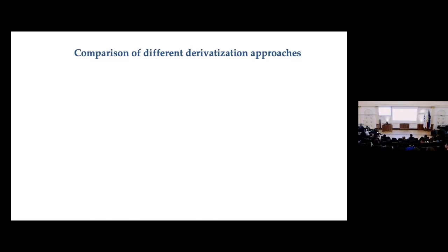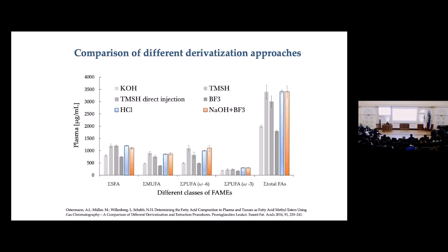The derivatization protocol also depends on the type of sample matrix you are using. The same protocol cannot be applied to biological samples as to food, and even within biological samples it can vary from urine to plasma or serum. A systematic comparative study was done in which a group compared six commonly used protocols evaluated across ten different classes of fatty acids including saturated fatty acids. It is very essential to have a protocol which does not create discrimination towards specific classes of lipids.